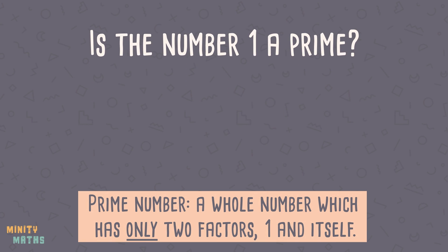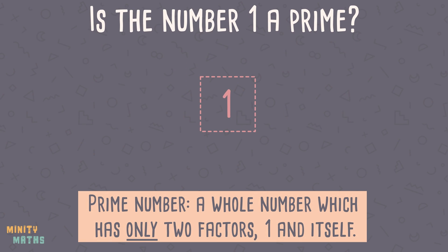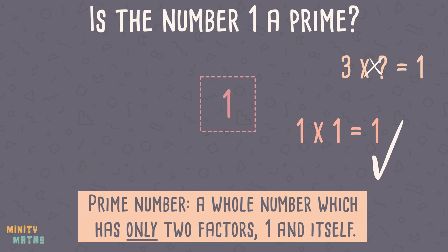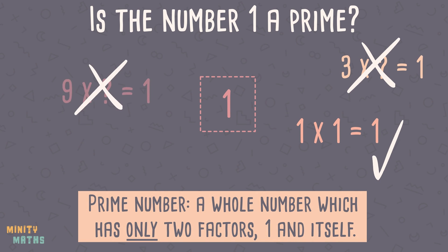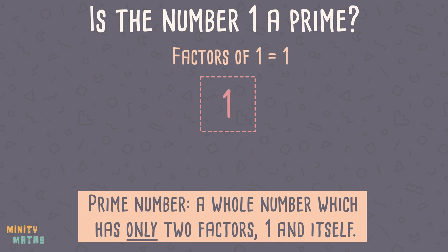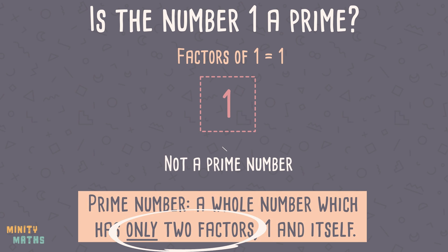What about the number 1? Is this a prime number? No, because the number 1 only has one factor — itself — and therefore doesn't fit the definition of a prime number. Nor is it a composite number, as it is not made up of any other factors.